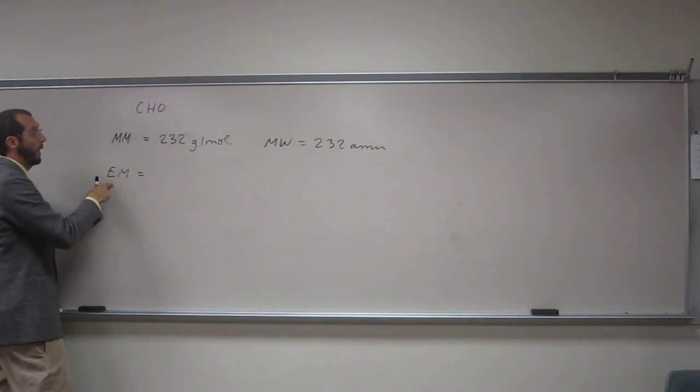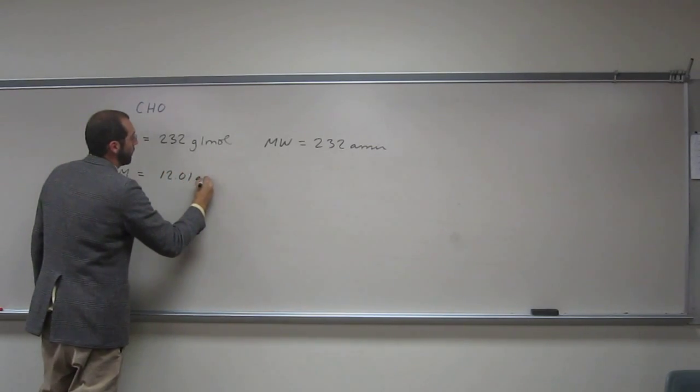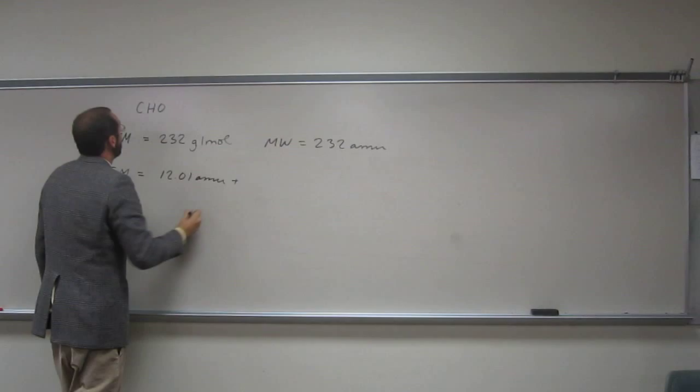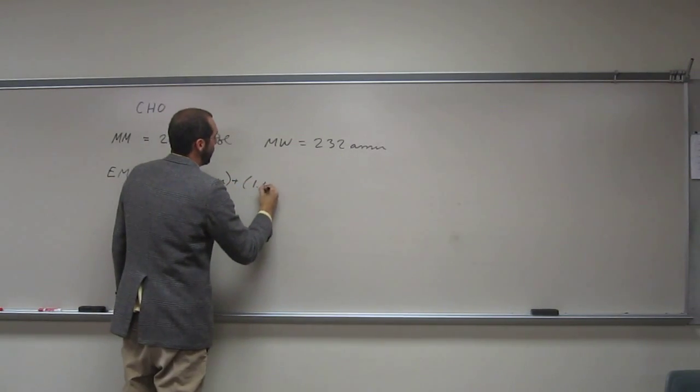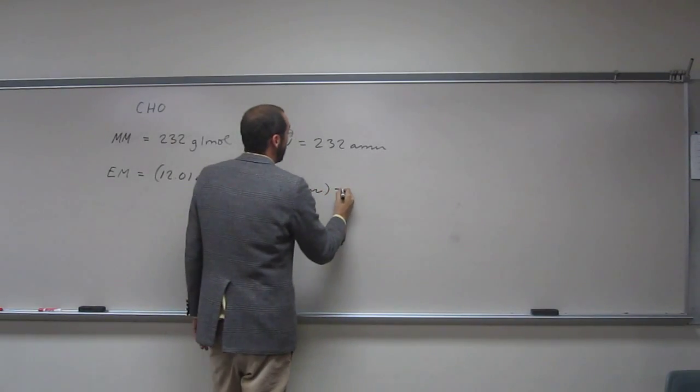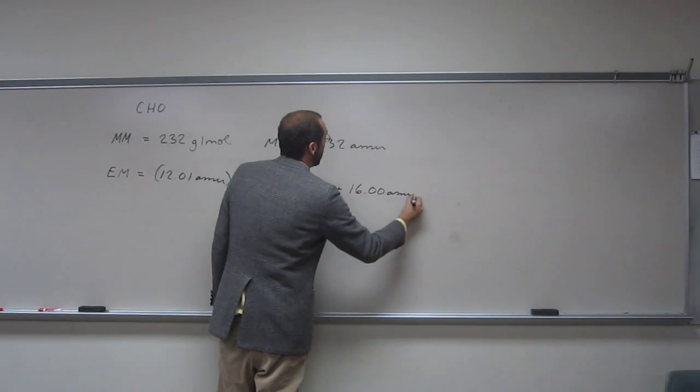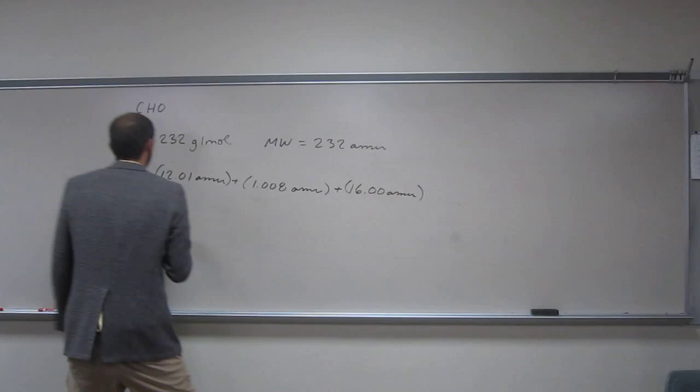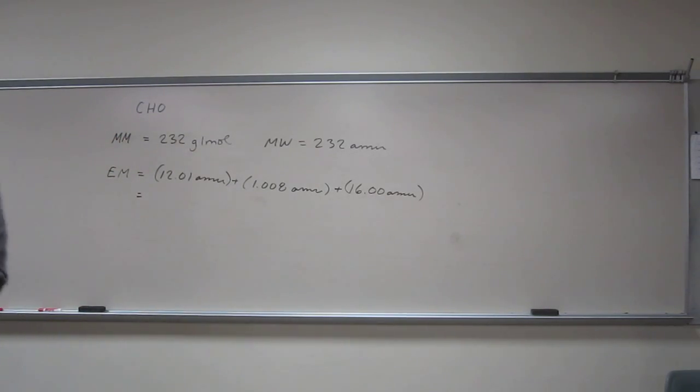So the empirical mass is 12.01 amu plus 1.008 amu plus 16.00 amu. Okay, so let's go ahead and add that up.